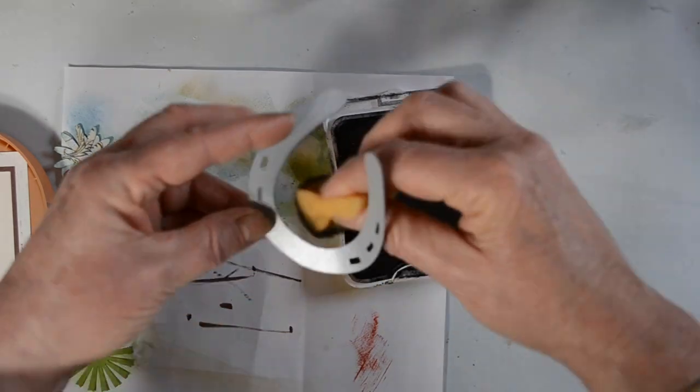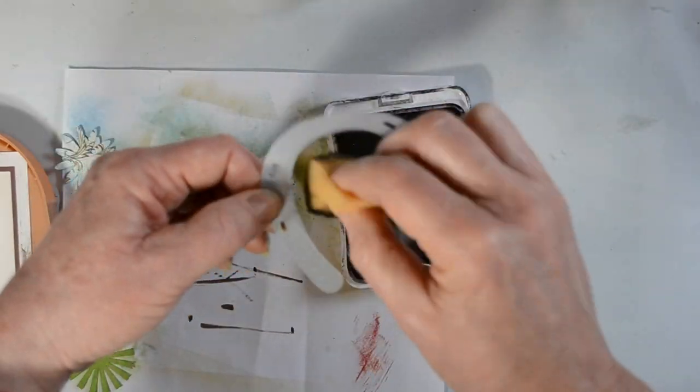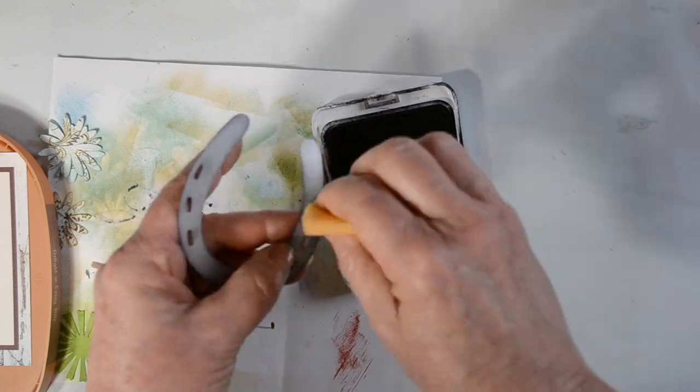I'm going around my horseshoe with a little bit of black ink, and it's sort of funny how this black ink lays on this shiny silver.